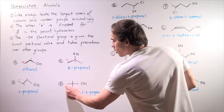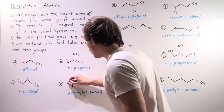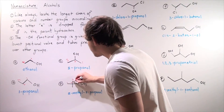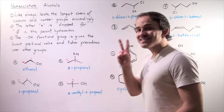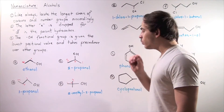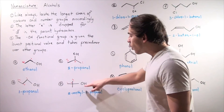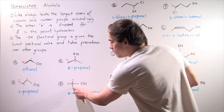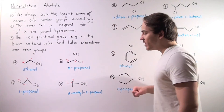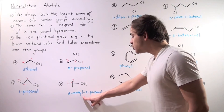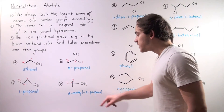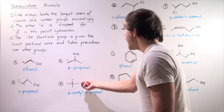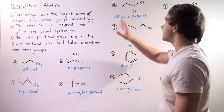So let's begin on this carbon here: one, two, three. That means on the second carbon, we not only have a hydroxy group but also a methyl group. So we have 2-methyl-2-propanol. On the second carbon, we have both our methyl and hydroxy.